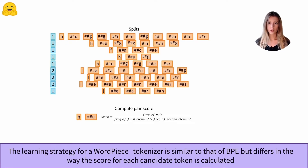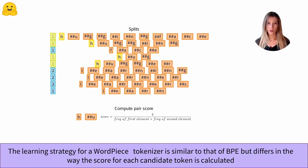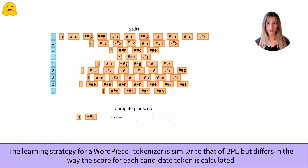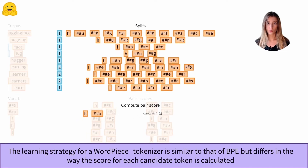Thus, at a fixed frequency of appearance of the pair, if the subparts of the pair are very frequent in the corpus, then this score will be decreased. In our example, the pair HU appears four times, the letter H four times, and the letter U four times, which gives us a score of 0.25.